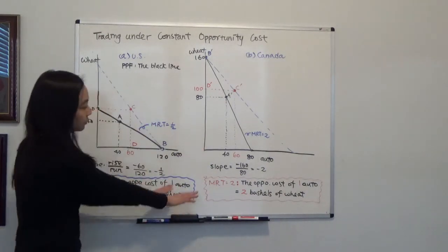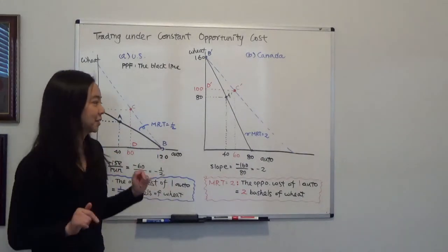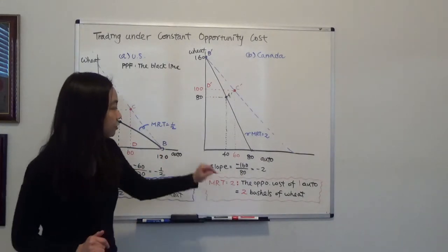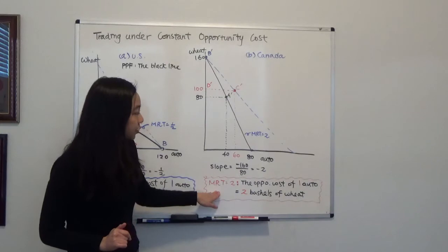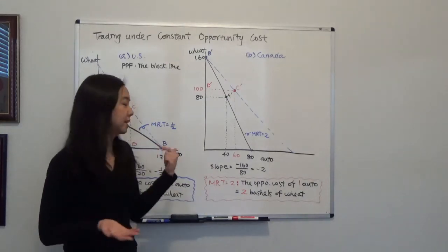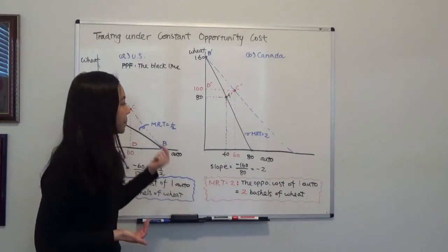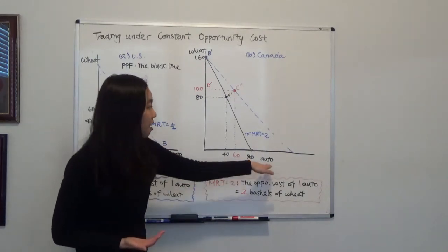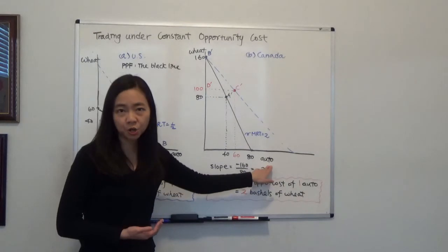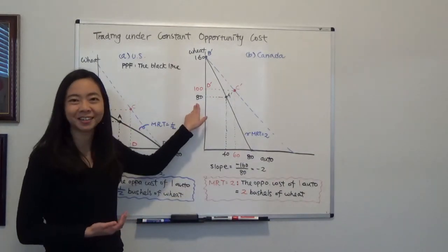So in this video, I want you to remember is this. The marginal rate of transformation tells you the opportunity cost of the good on the horizontal axis, in terms of the good on the vertical axis,